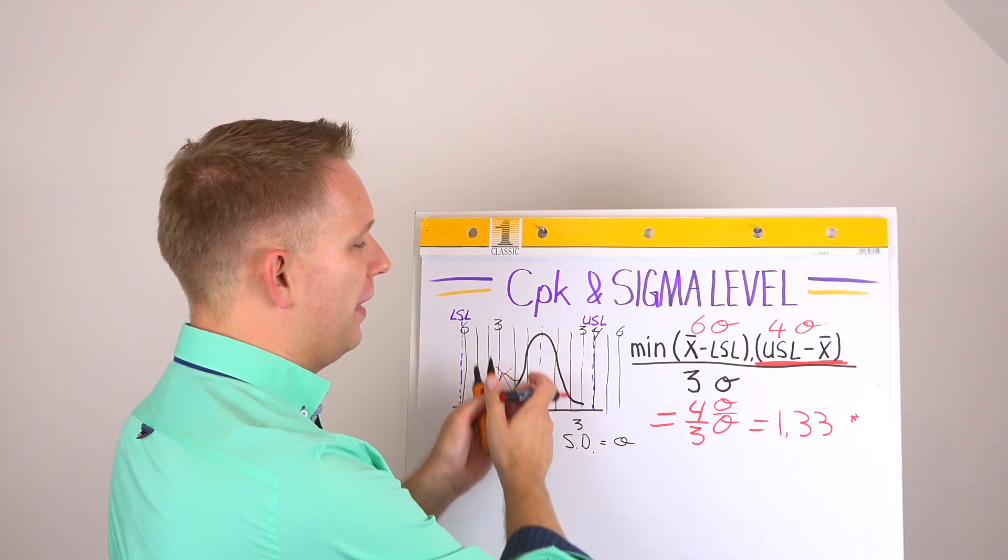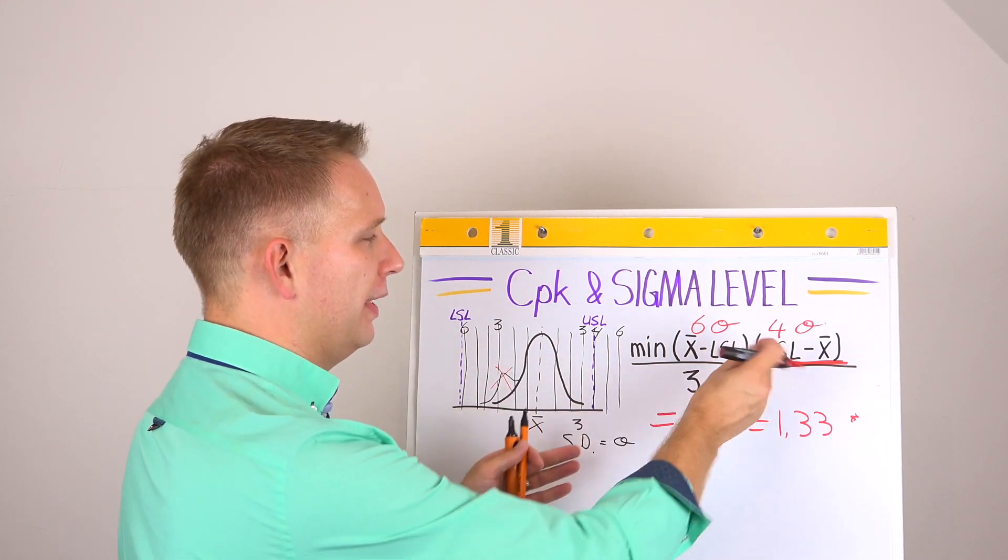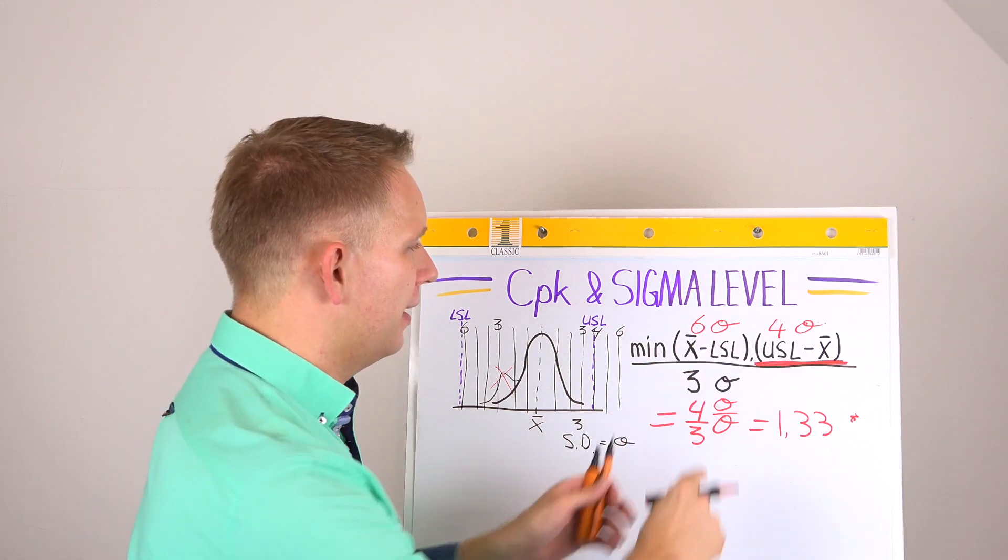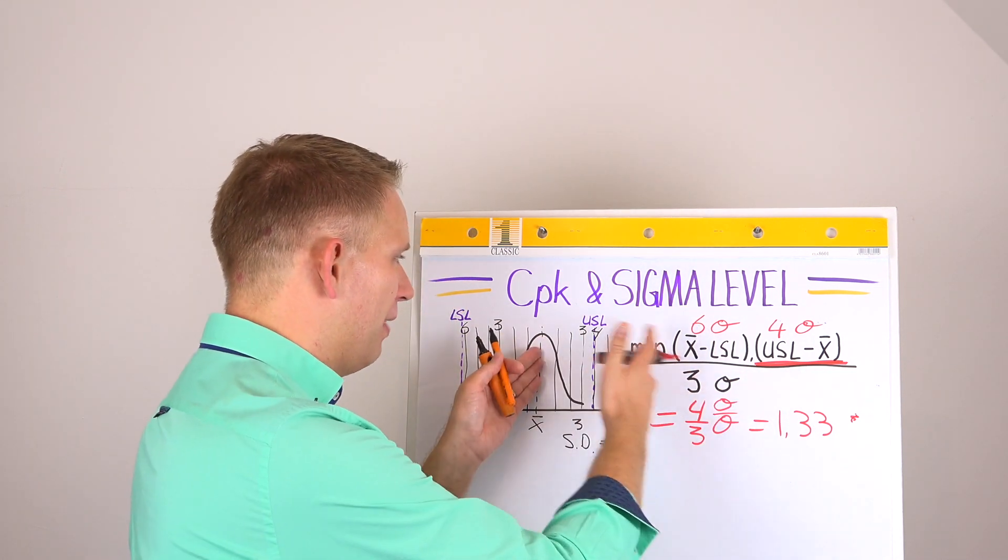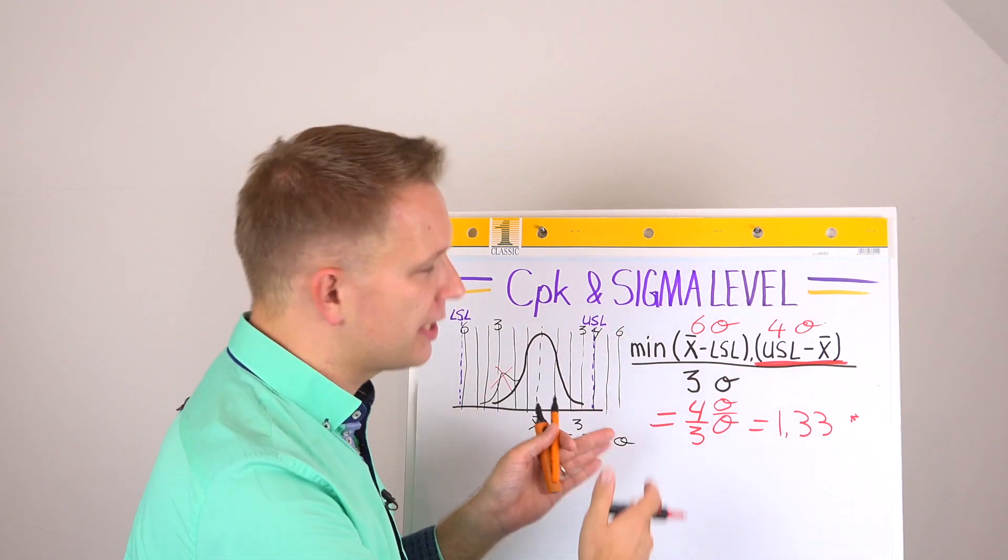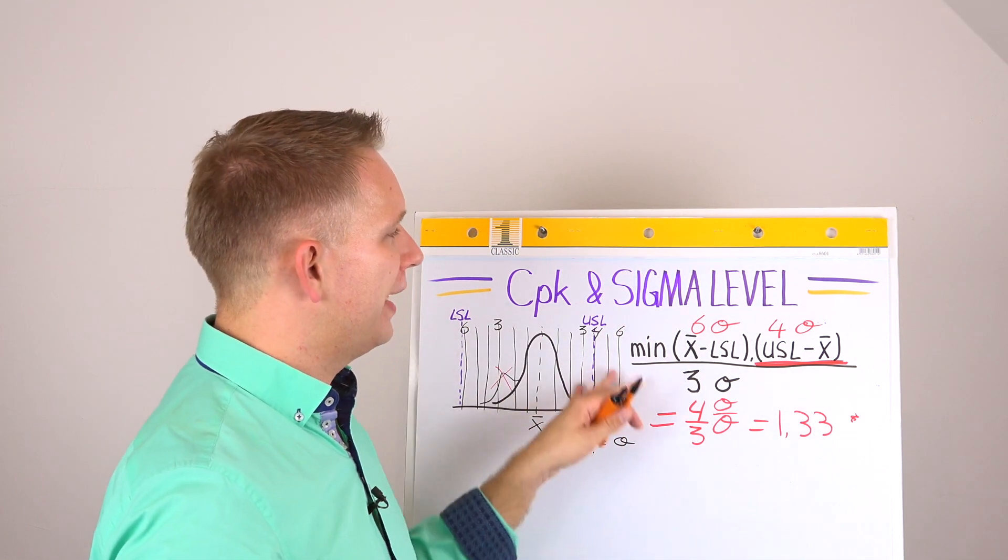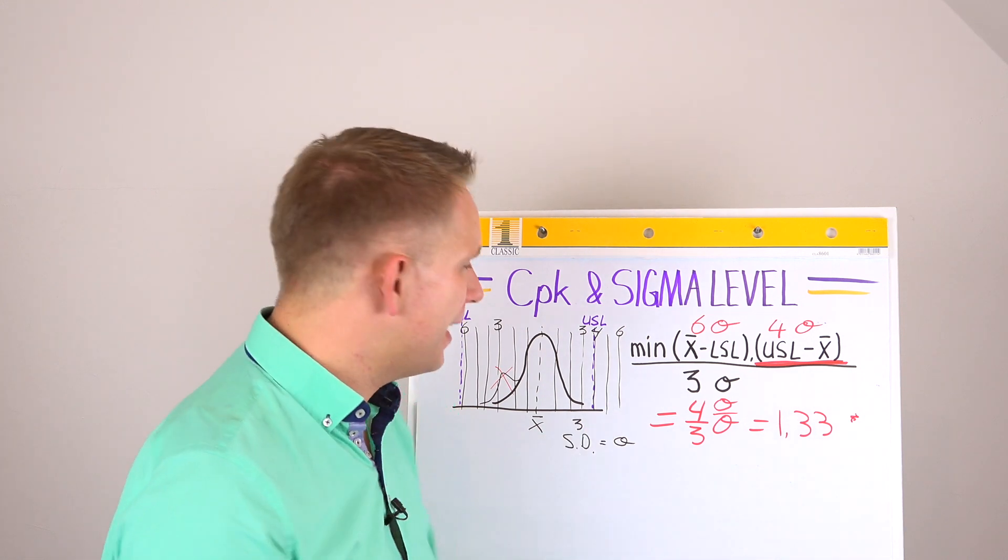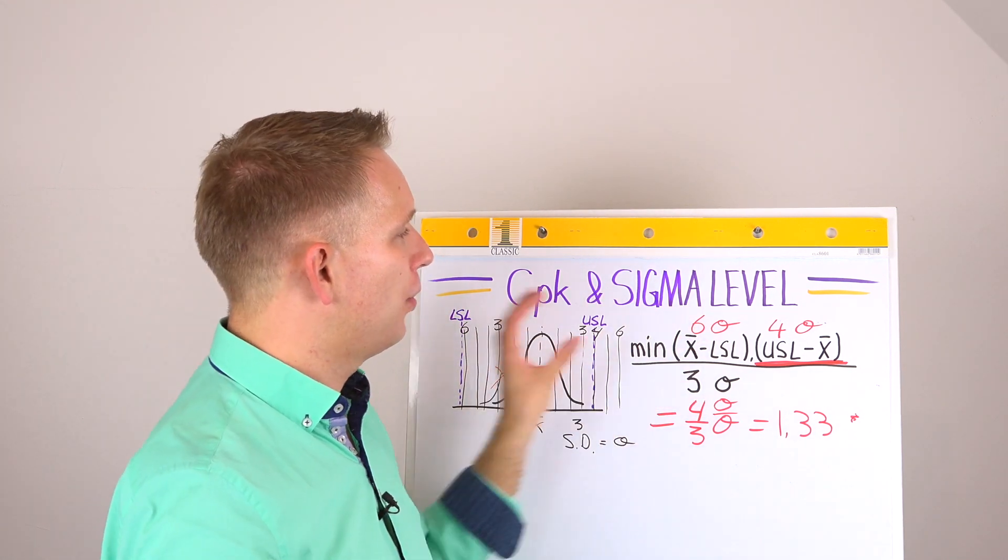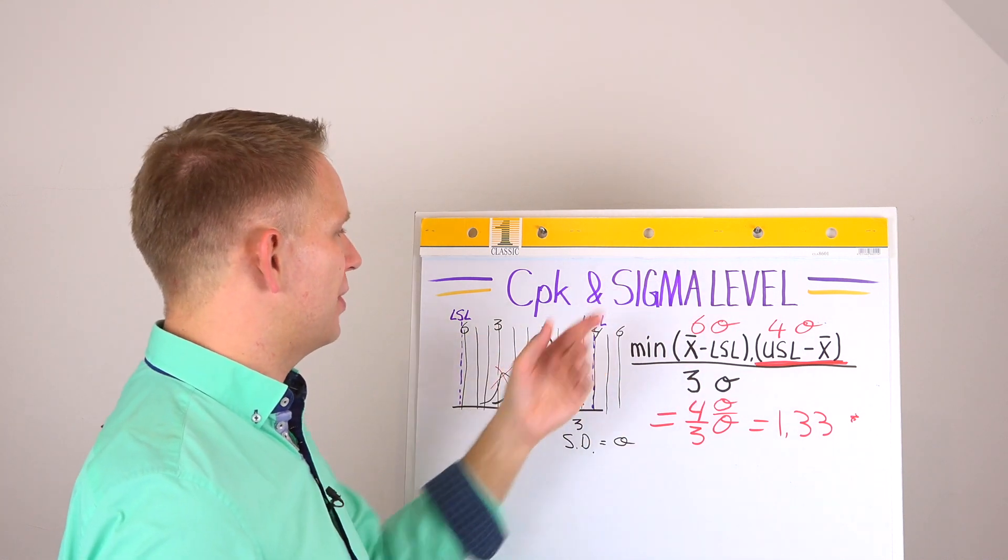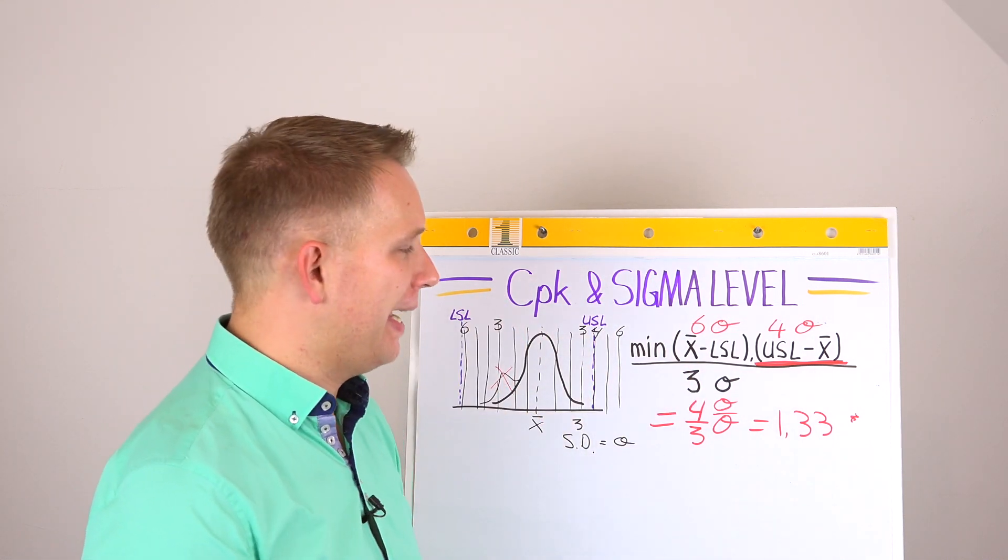And the sigma will also be the standard deviation that we have here, which might be 2, for instance. But when you already check how many sigmas you are away from the limit, you will see how these two are completely linked. So how the sigma level is completely linked with CPK.